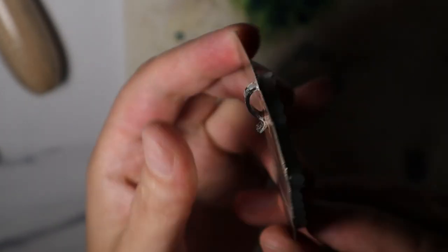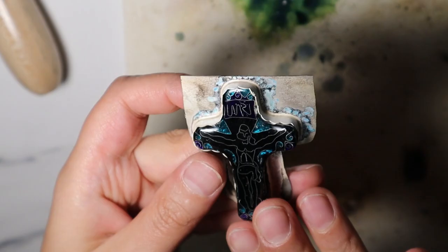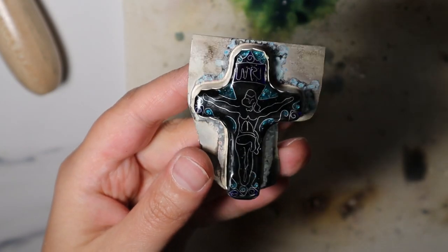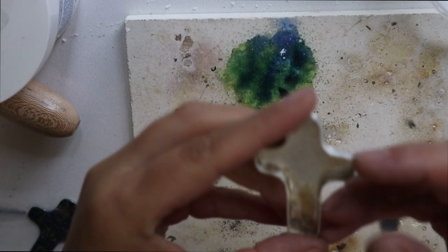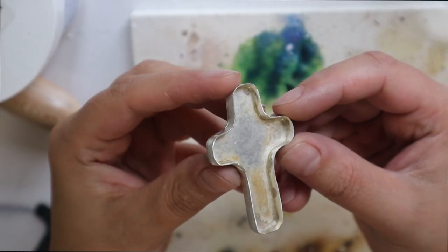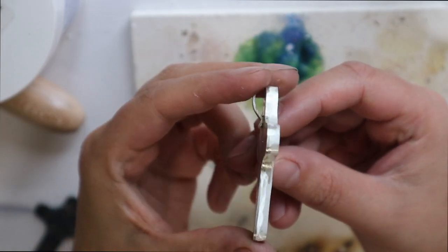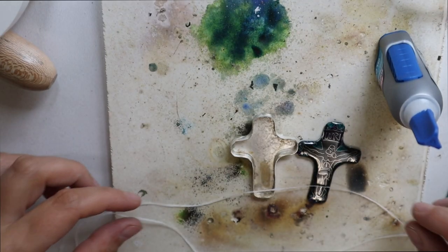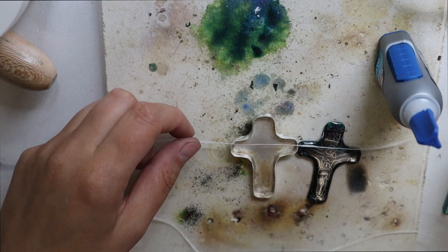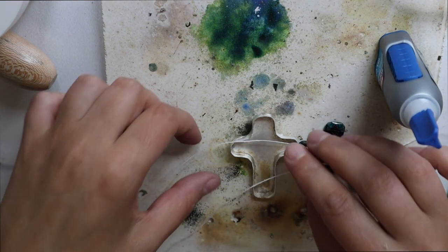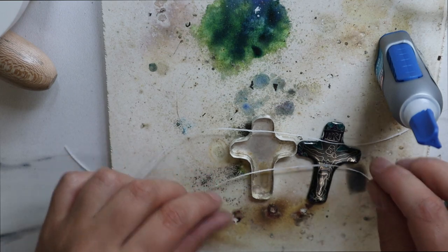There we go. It's ready. Now I have to remove all the excess. Okay, this is our beautiful cross. I'm going to use any kind of super glue and toothpick thread.